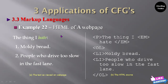Let us take one example of HTML for a web page. See — 'the thing I hate' is one sentence. Within the paragraph tag you have written 'the thing I hate.' Next, ordered list and list item tags are used here to represent one example of a web page in the HTML language.